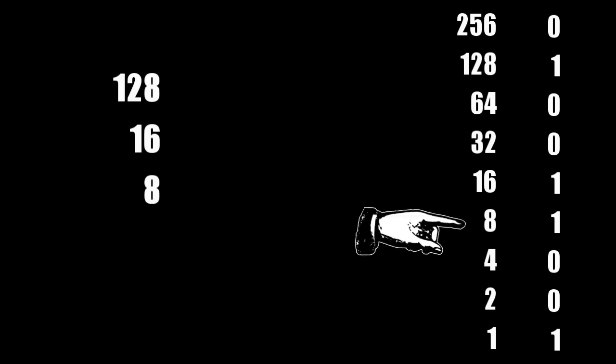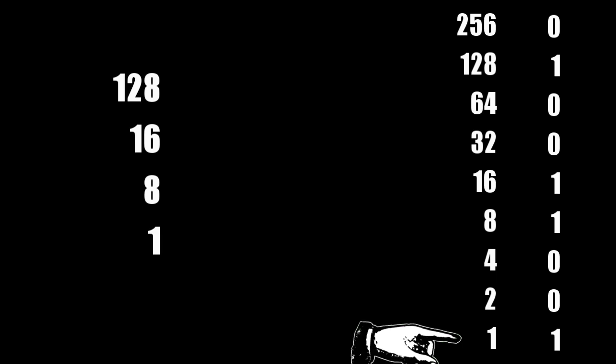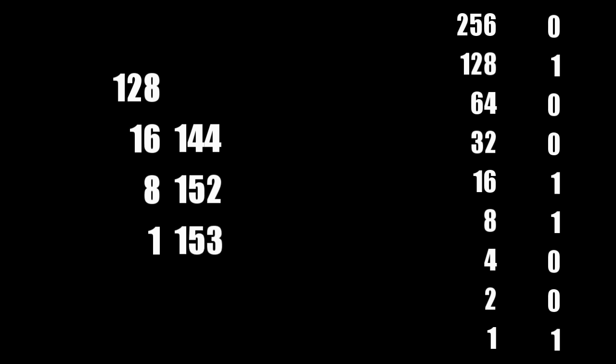And for our final example, let's convert this binary number into decimal. We have a 128, we have a 16, we have an 8, and we have a 1. 128 plus 16 is 144. 144 plus 8 is 152. 152 plus 1 is 153. So this binary number is 153 in decimal.